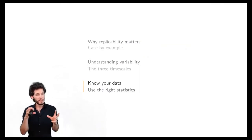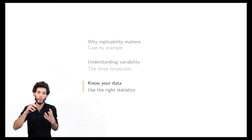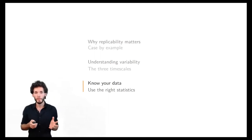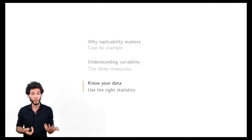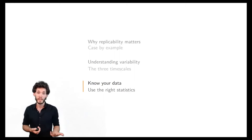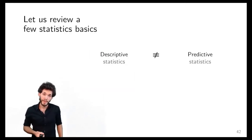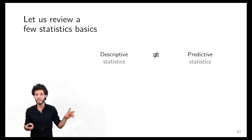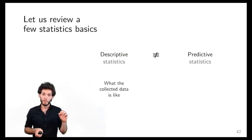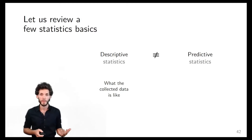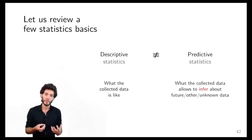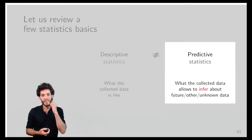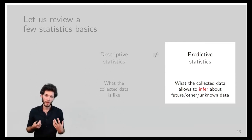We've seen why replicability matters and what the problem is. I've discussed the idea that instead of looking at why we have variability, we should look at how it looks in the data. Now we enter a slightly more theoretical part about statistics basics — what you need to know in order to avoid basic mistakes in data analysis. The first point is that people surprisingly often confuse two very different things: descriptive statistics and predictive statistics.